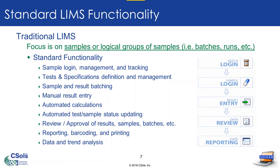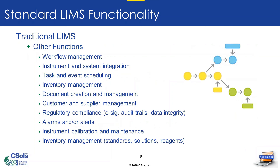The type of functionality you get is all associated with that sample lifecycle — sample login and management, sample test assignment, result entry for both individual samples and batches, manual entry of results, instrument interfacing, reporting, barcoding, and data trend analysis. Over time, additional functionality became standard inside LIMS. Some items are extra add-ons, such as instrument calibration and maintenance, which can cost extra — so be careful of total cost of ownership. Inventory management, task and event scheduling, and workflow management have also all become part of LIMS systems, and standard functionality has grown over time, expanding into other areas.